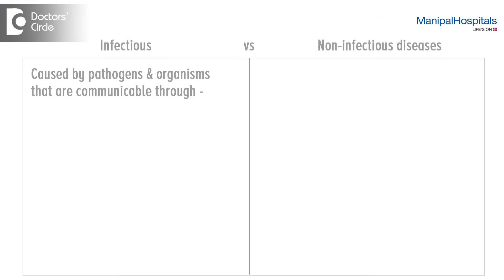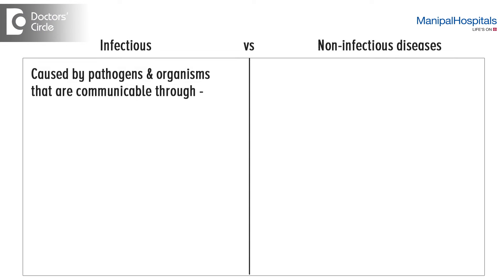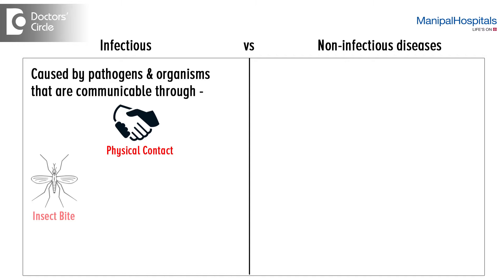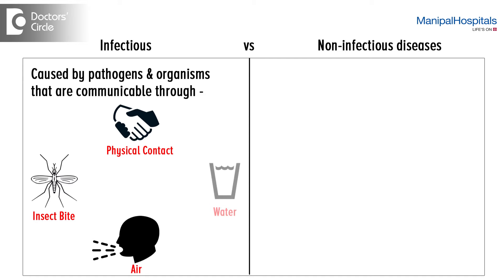The distinction between infectious and non-infectious diseases: infectious diseases are caused by pathogens or organisms that enter our body or bloodstream, and can be transferred from person to person via physical contact, insect bite, or air or water — that's called airborne or waterborne disease.